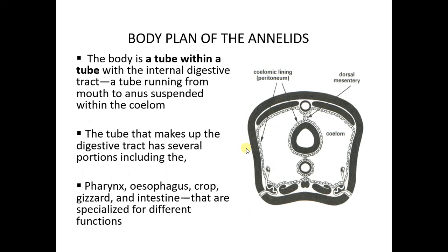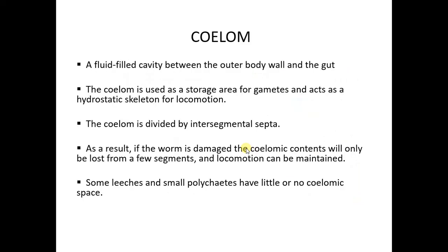The body plan: the earthworm is done like a tube — a smaller tube slotted into a bigger tube, so we say that they are like a tube inside a tube. The inner tube has the digestive system or the digestive tract, where you have the pharynx, the oesophagus, the crop, the gizzard, and the intestine. In between these two tubes is the coelom. The coelom is a fluid-filled cavity between the outer body wall and the inner wall.